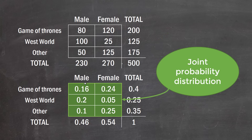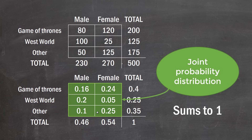Collectively, those six cells form what's called the joint probability distribution. All six cells add up to one, because everyone in this distribution has to be in one of these cells — you have to be either male or female, and you have to have selected one of the show options. So it's no surprise that this should sum to one.